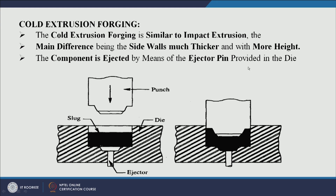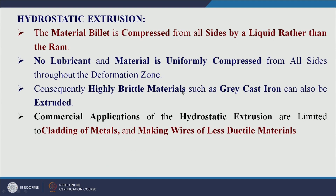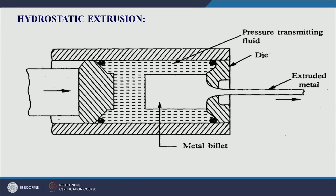The component is ejected with the help of the ejector pin provided in the die. For hydrostatic extrusion, the metal which is mostly brittle or of low ductility is shown in the diagram. The fluid is pressurized with the help of the ram. The pressurized fluid also helps to move the metal in the forward direction.